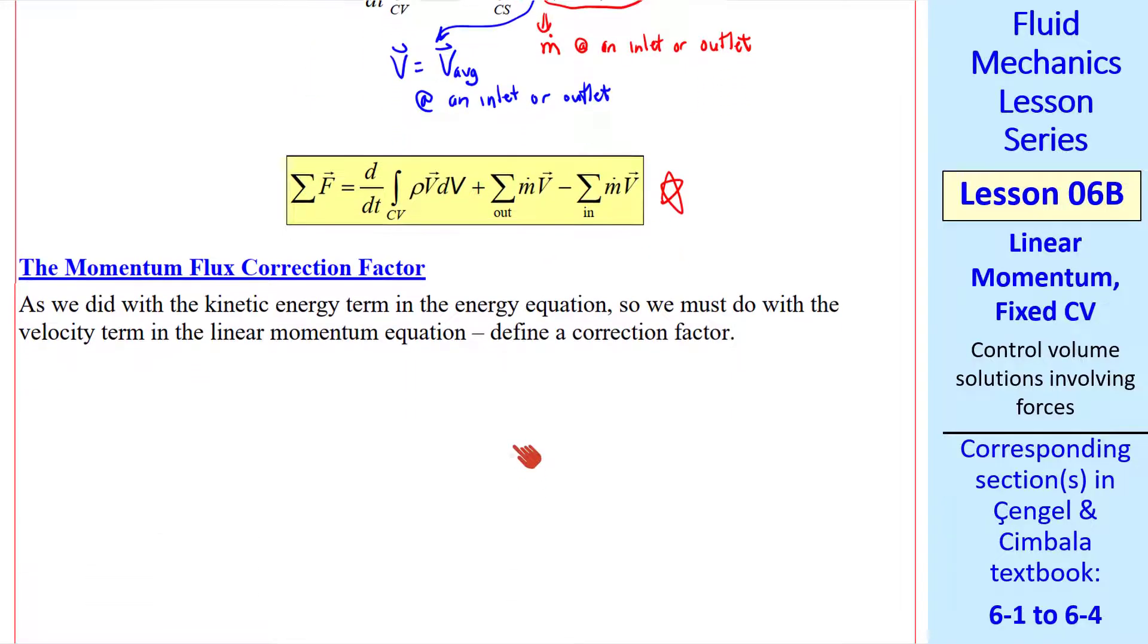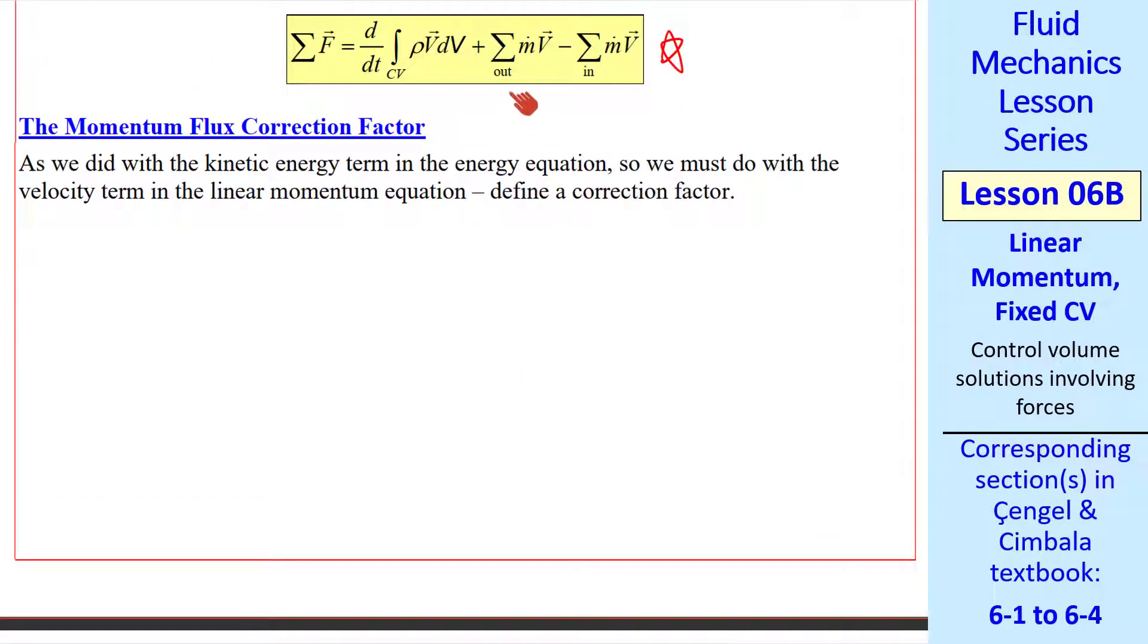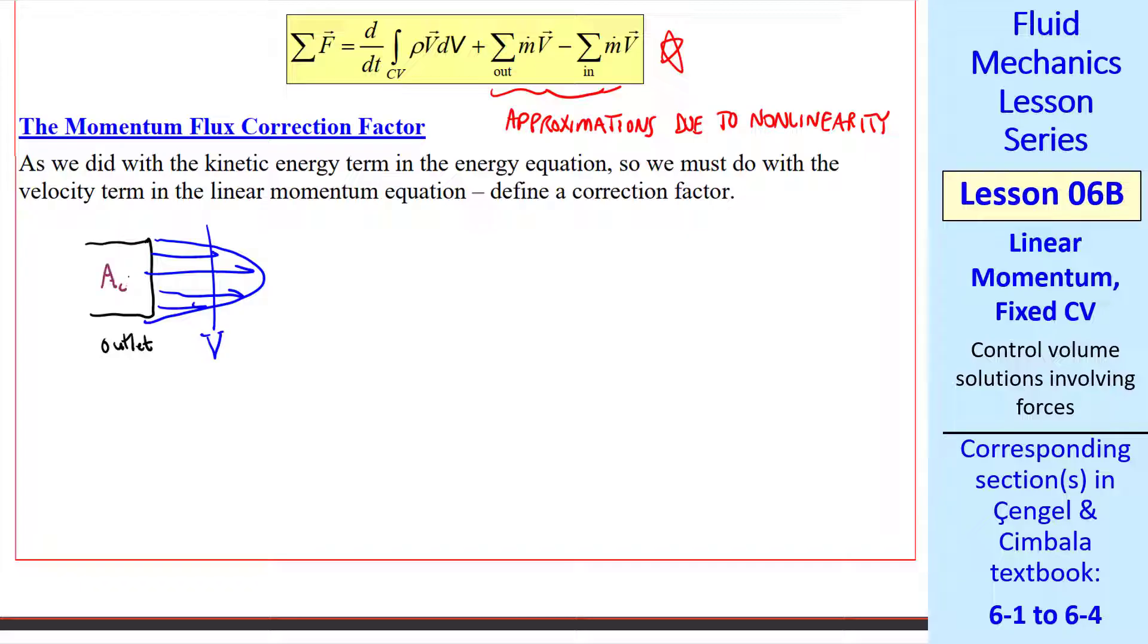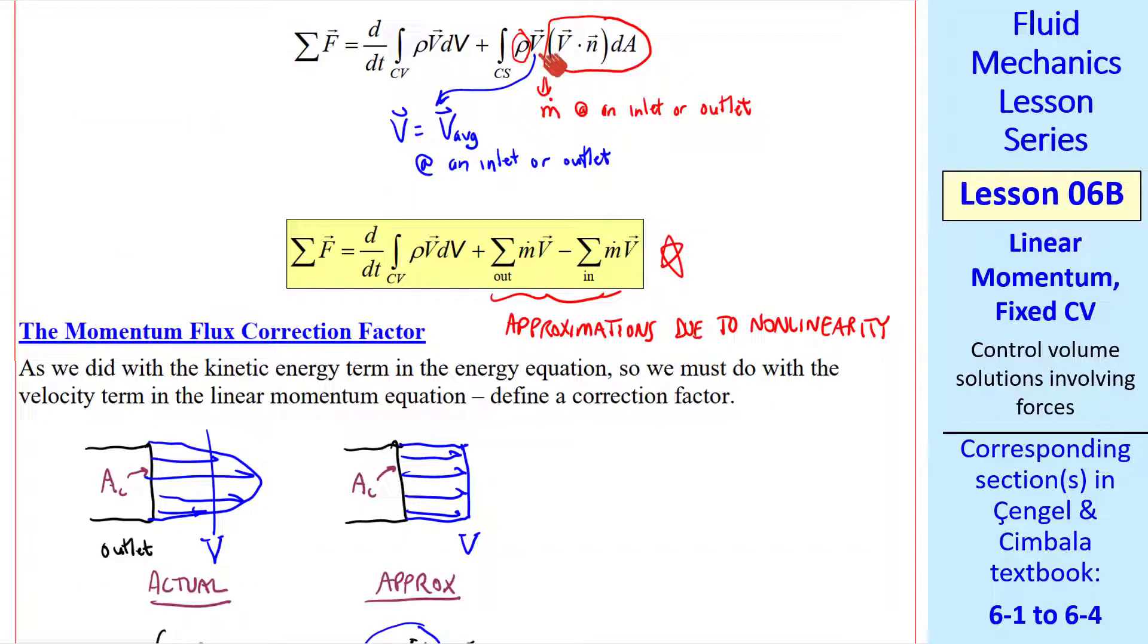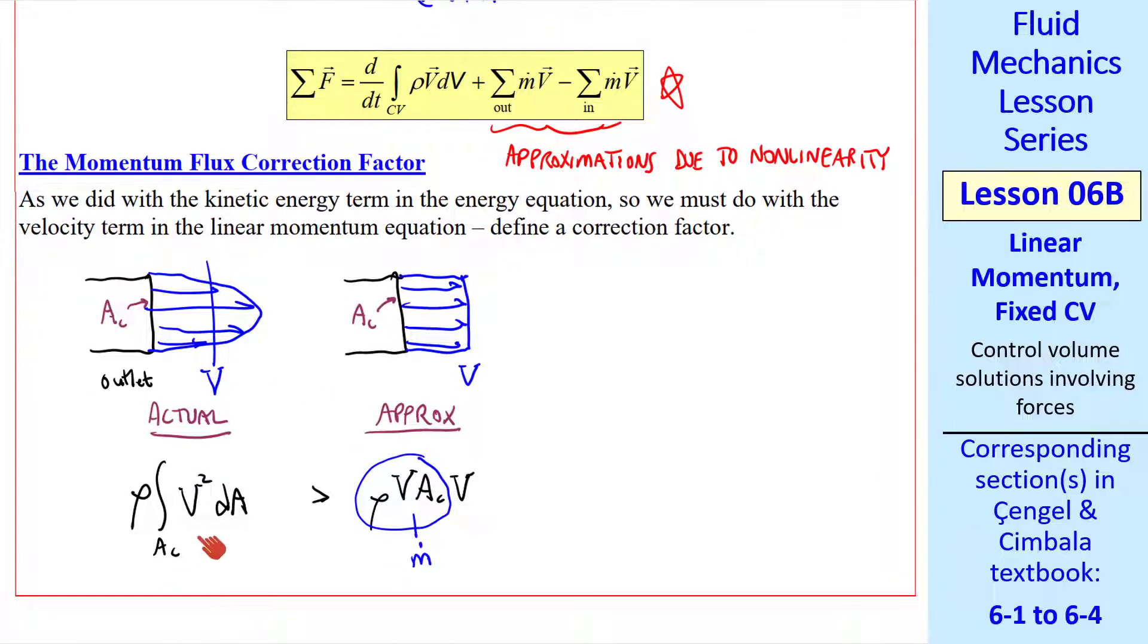Well, just as we did with the energy equation, we need to define a correction factor for the same reason, namely these terms are approximations due to non-linearity of the integral. For example, at an outlet, the actual velocity profile may look something like this, where v is the average, and this is the cross sectional area at the outlet. In this term, we've approximated the velocity profile as uniform, but when you do the integration, this is not exact. In fact, it turns out that rho integral over ac v squared dA is greater than rho v squared ac, where we recognize this as m dot. You may recall that we had a v cubed term in the kinetic energy equation. In this case, we have a v with another v, which is why we get a v squared here. We're also talking about incompressible flow, so I took the density out.